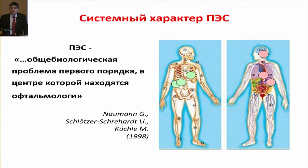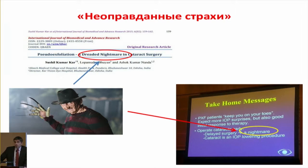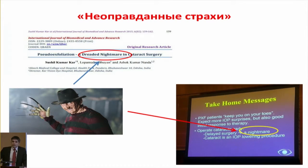Identification of pseudo-exfoliative material in extra-ocular tissues — brain, skin, liver, kidneys, lungs, heart — allowed formulation at the end of the 1990s that pseudo-exfoliative syndrome is a general biological problem of the first order. Its significance sometimes leads cataractal surgeons to refer to it like a nightmare, given that 30–40% of cataract surgeries in some clinics involve pseudo-exfoliative process.